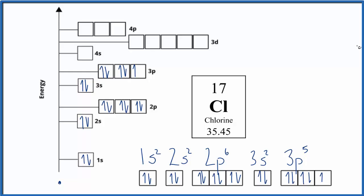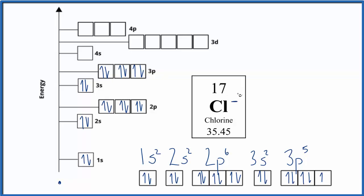But what if we had the chlorine anion — this negative ion? That wouldn't change the number of protons, but it would change the electrons. Because this is negative, we'd have one more electron — electrons are negative, so we have an extra one here. We could put that right here, and that would fill the third energy level, making it very stable. That's why chlorine gains one electron when it forms ionic bonds. This would be the electron configuration of the chloride ion, Cl⁻: 1s² 2s² 2p⁶ 3s² 3p⁶.